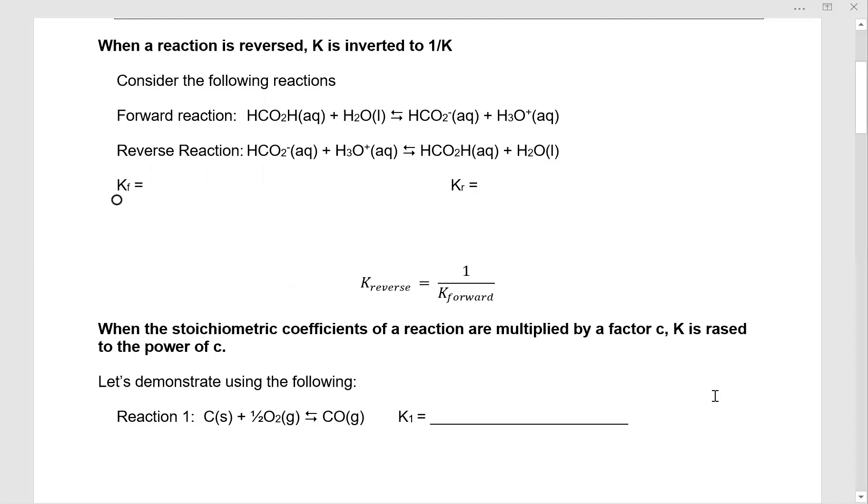Consider the following reactions. We have the forward reaction and then we're going to flip it around and we've got the reverse reaction. We're going to write equilibrium expressions for all of them. So K forward, you should be writing HCO2 minus H3O plus. We're going to cross out the H2O because it's a liquid. So in our denominator, we have HCO2H.